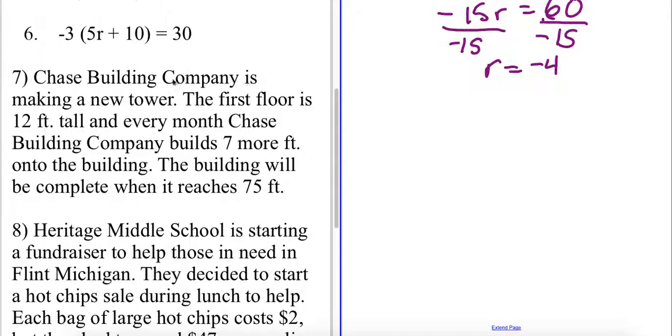So I can see here Chase Building Company is making a new tower. The first floor is 12 feet tall and every month Chase Building Company builds 7 more feet onto the building. So I know that there's a rate of change of 7. I know that they started with 12 feet and the building has to reach 75 feet in order to be complete.